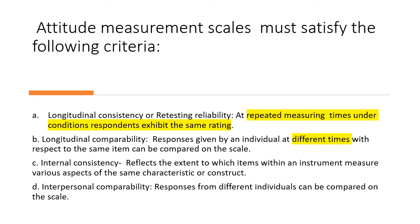A good Likert scale must satisfy certain criteria; otherwise the scale is not reliable and cannot be used for research. The first criterion is longitudinal consistency or retesting reliability — that means at repeated measuring times under the same conditions, respondents exhibit the same rating. When we collect data today and tomorrow, we should get the same result.